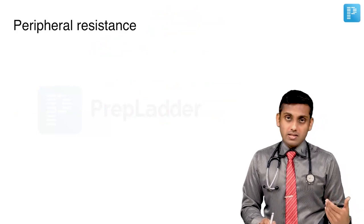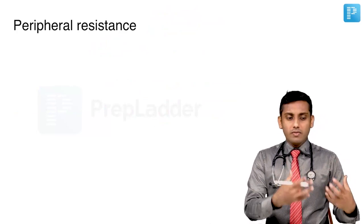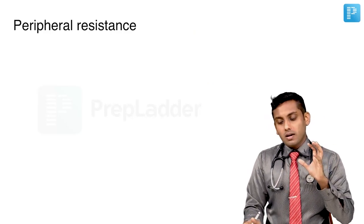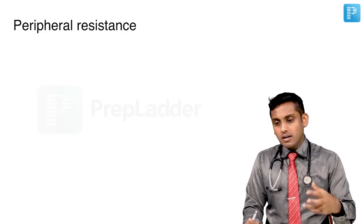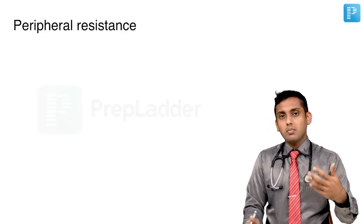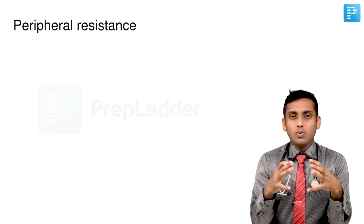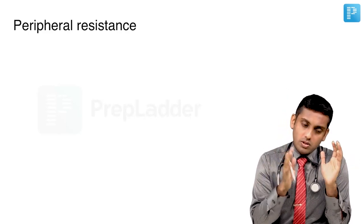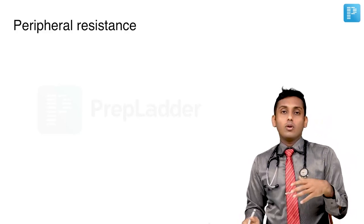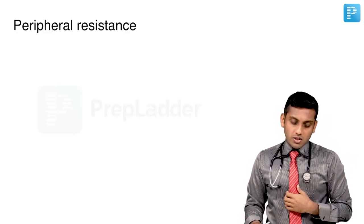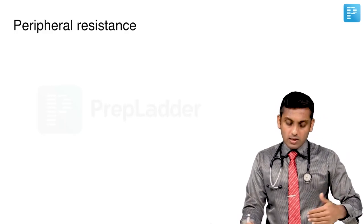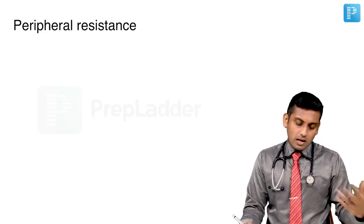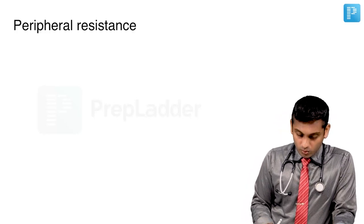The next determinant is peripheral resistance. Cardiac output is nothing but stroke volume into the heart rate, and the heart rate is variable to maintain a fixed output. The amount of volume pumped in each beat multiplied by the heart rate gives you the cardiac output. Stroke volume is a function of both the volume in the heart as well as how much the vasculature can accept. The heart rate is obviously a variable on its own.